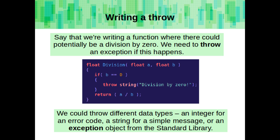Let's add some error handling. Say we're writing a function where we could potentially be doing a division by zero — we would need to throw an exception if this happens. We could throw different data types: we could use an integer error code, a string error message, or an exception object from the standard library.